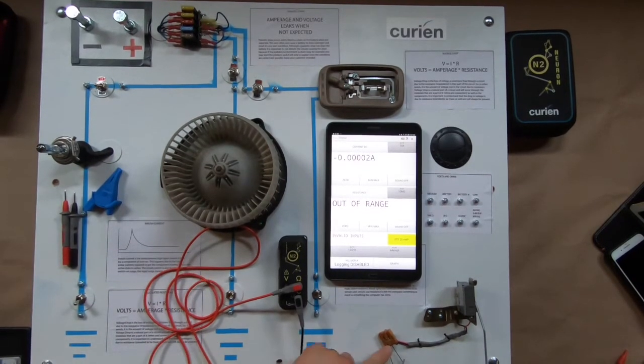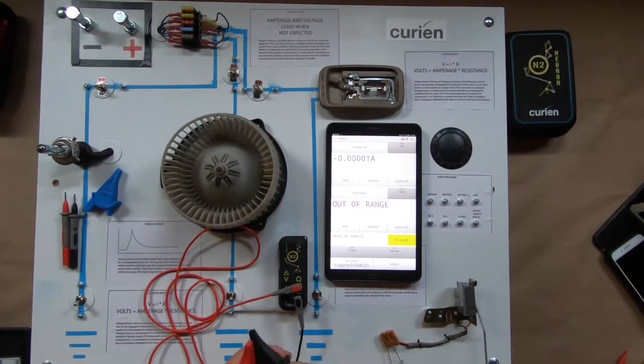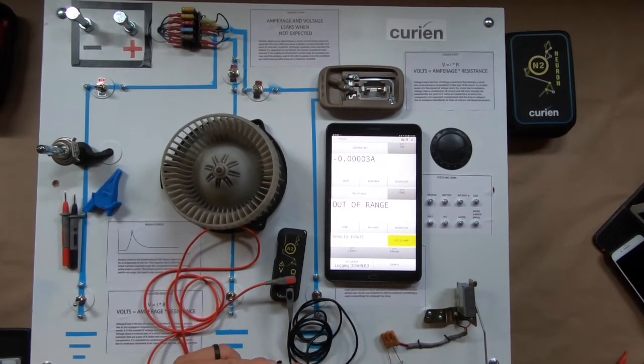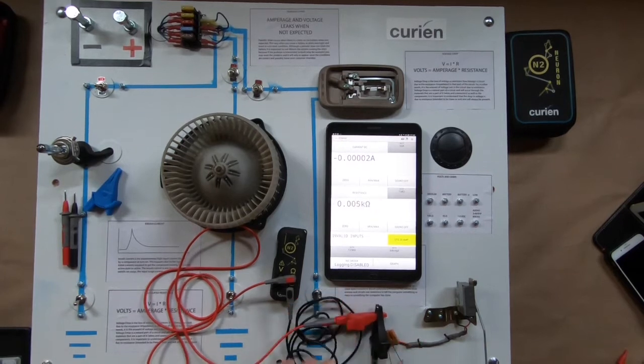Now, what we're using is our back probe pins that come with the back probe lead set, but before we do that, something you always want to do is you want to ohm out your leads.